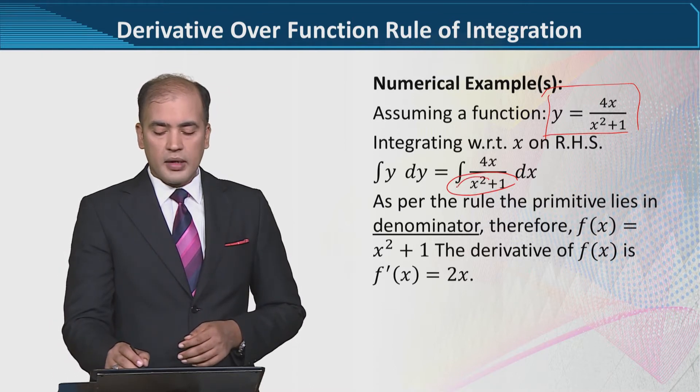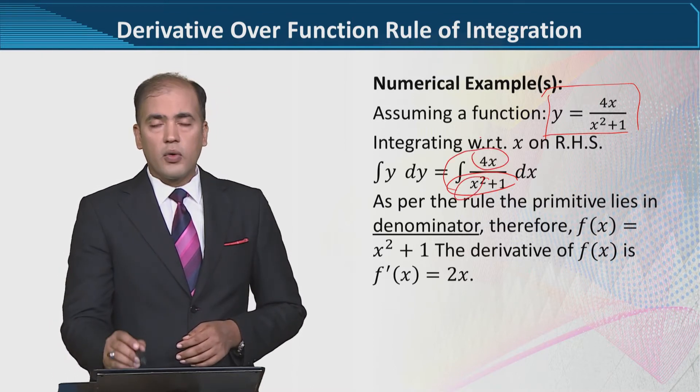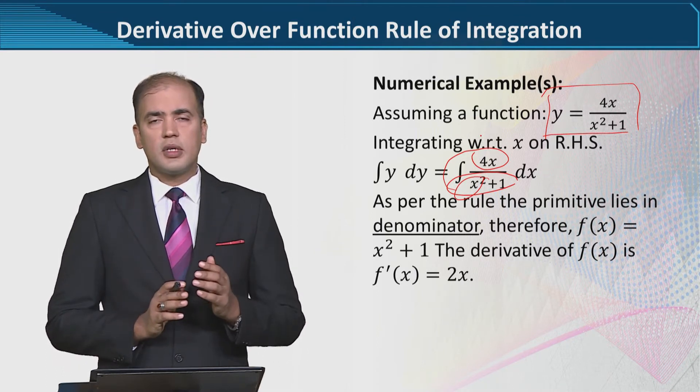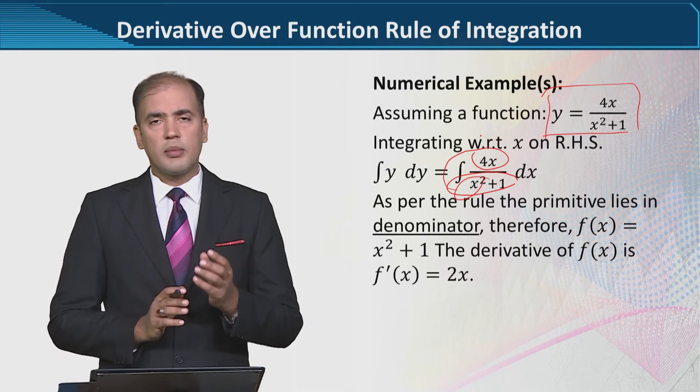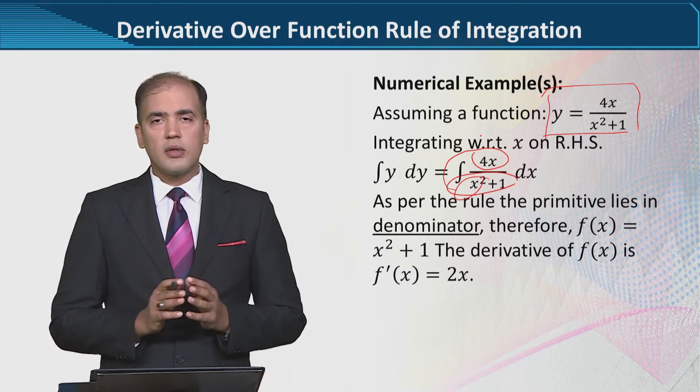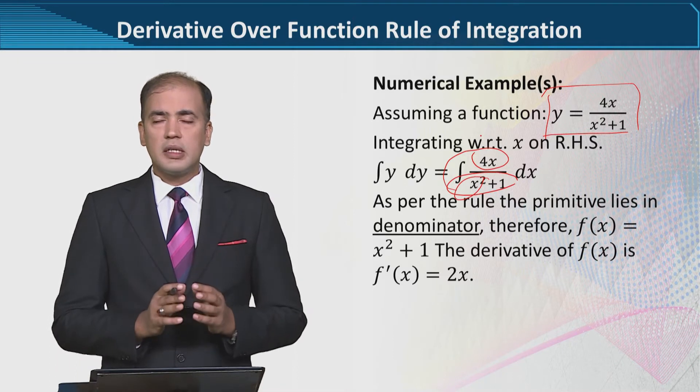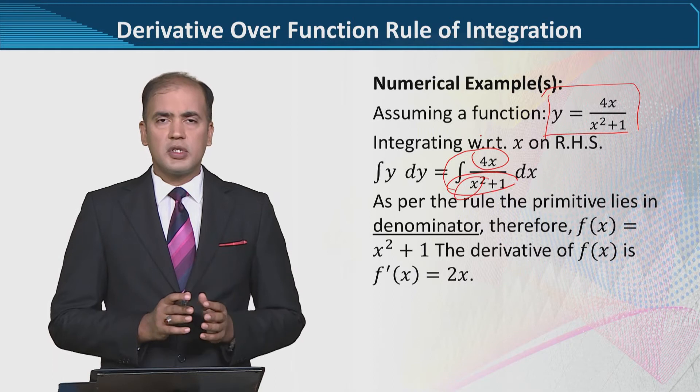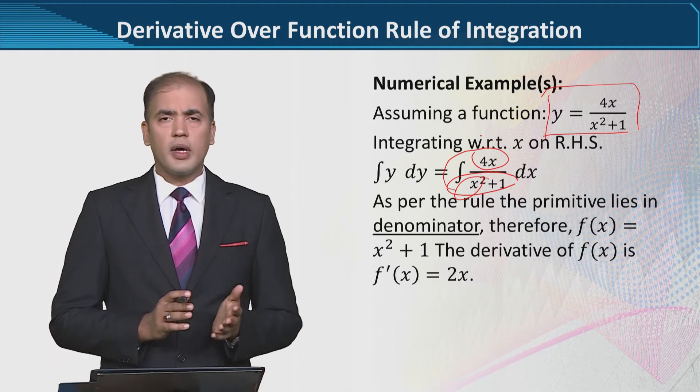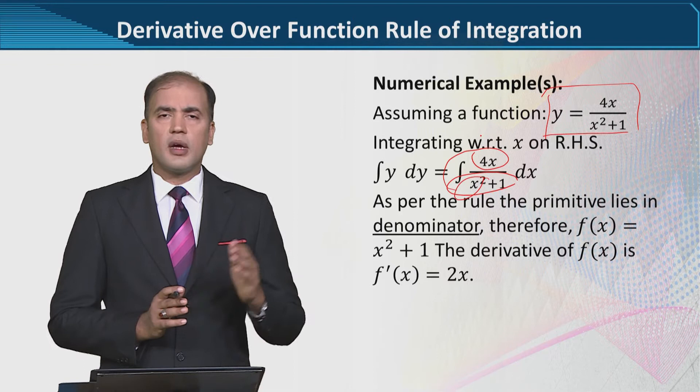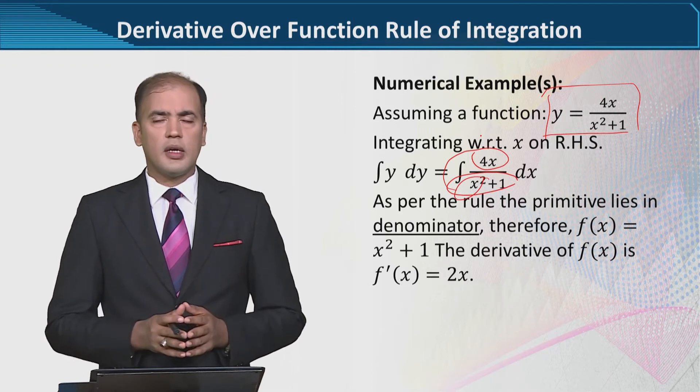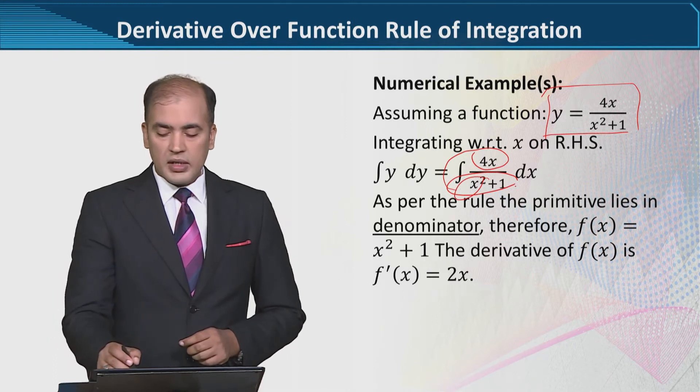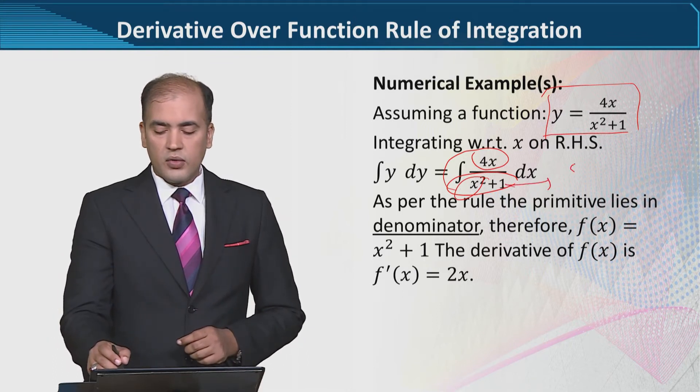Assuming a function y = 4x/(x²+1), integrating with respect to x on the right-hand side, as per the rule the primitive lies in the denominator, therefore f(x) = x²+1. The derivative of f(x) is f'(x) = 2x. The numerator does not have the exact term of f'(x)—we have 4x when it should be 2x.